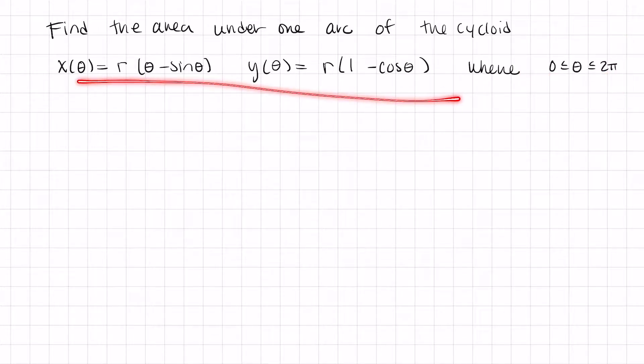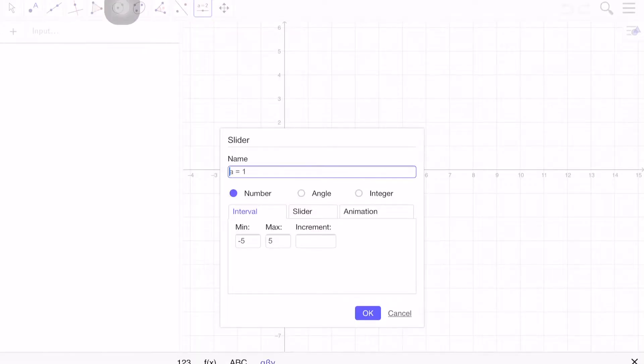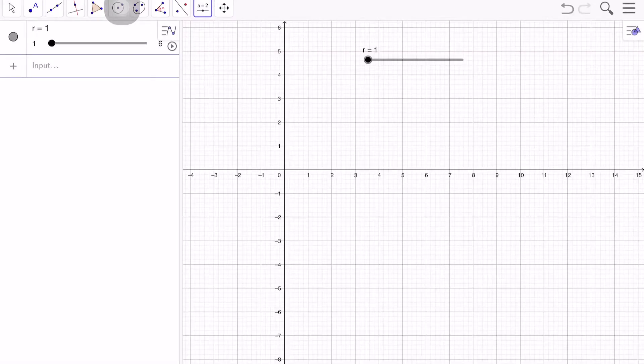Hopefully looking at this on GeoGebra will help you see how you can do your own picture to visualize curves. Let's define a slider here and call it R, and you'll see why we need this in a second. So say R equals 1, let's go from 1 to say 6.